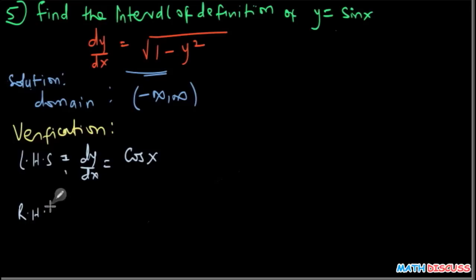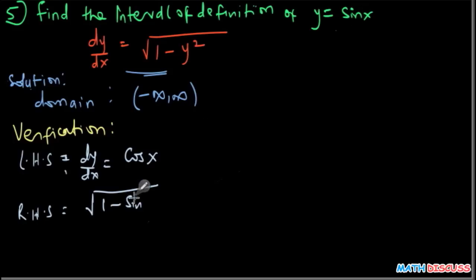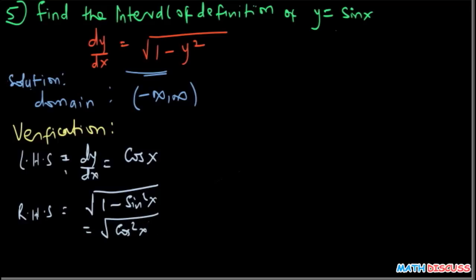The right-hand side is the square root of 1 minus y squared, which becomes the square root of 1 minus sine squared x. That simplifies to the square root of cosine squared x. Since cosine squared x is always non-negative, the square root gives us the absolute value of cosine x.